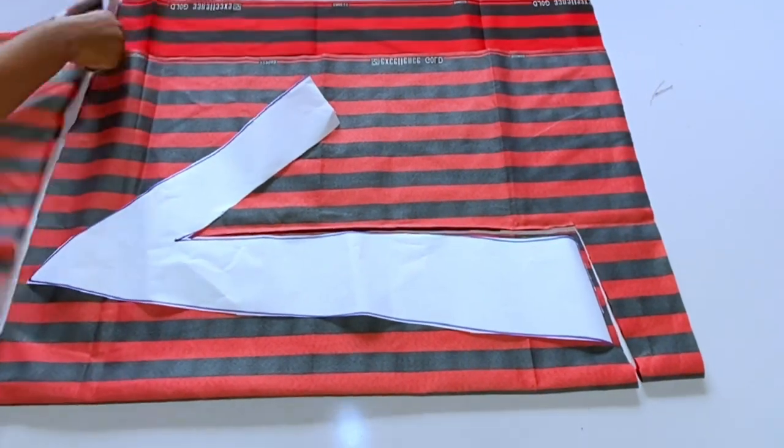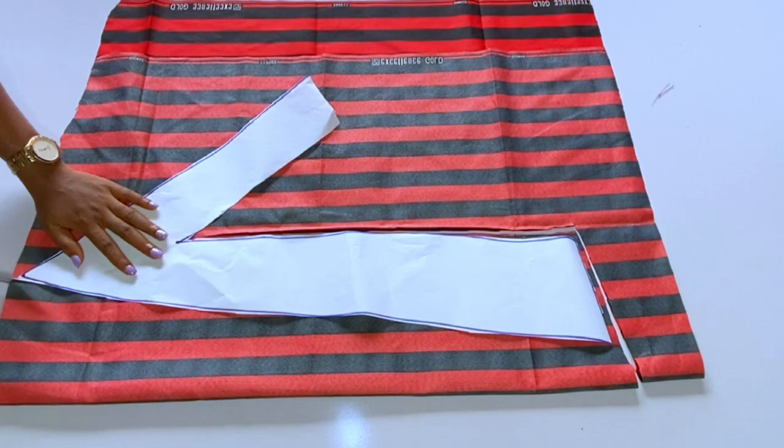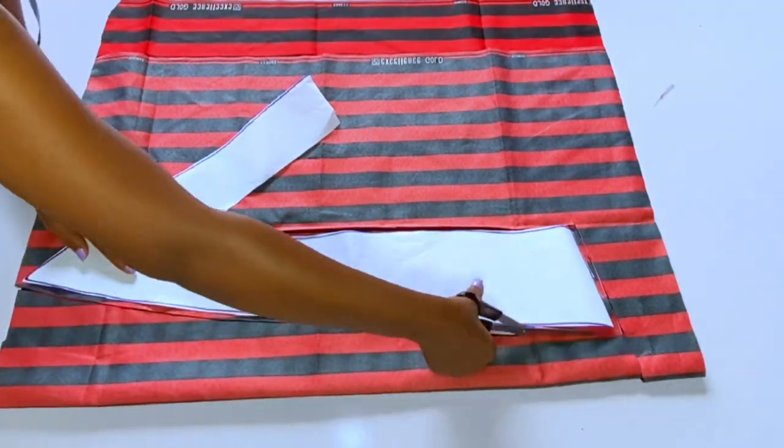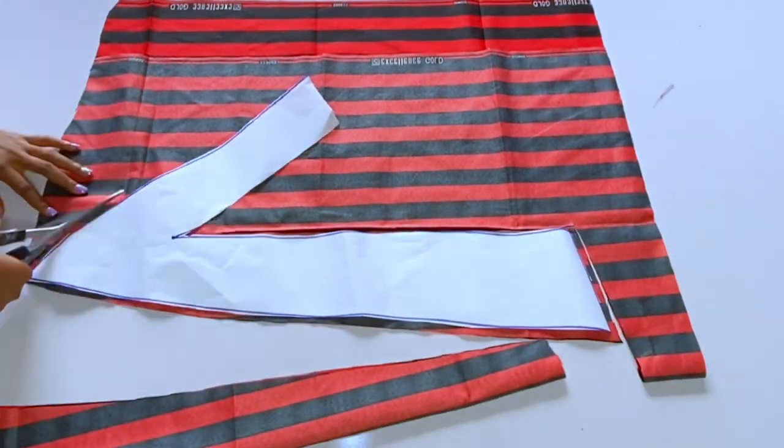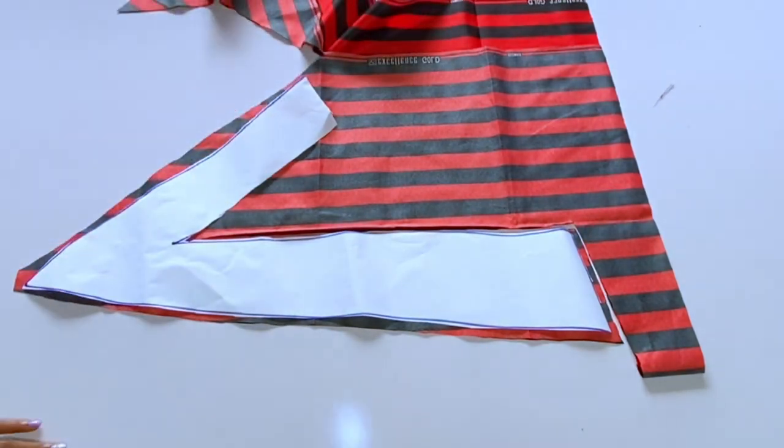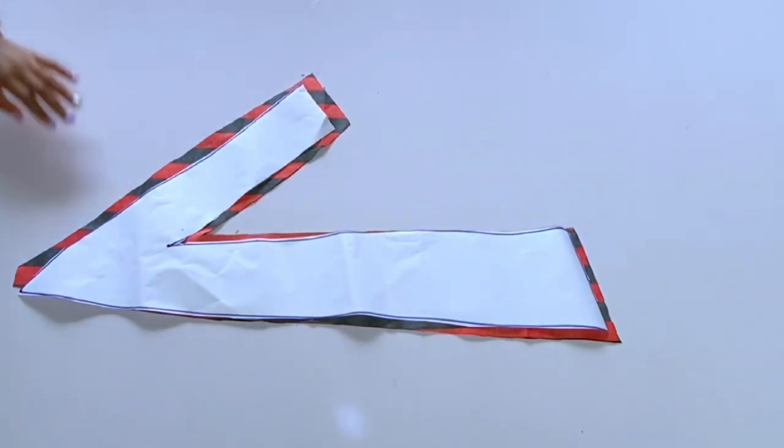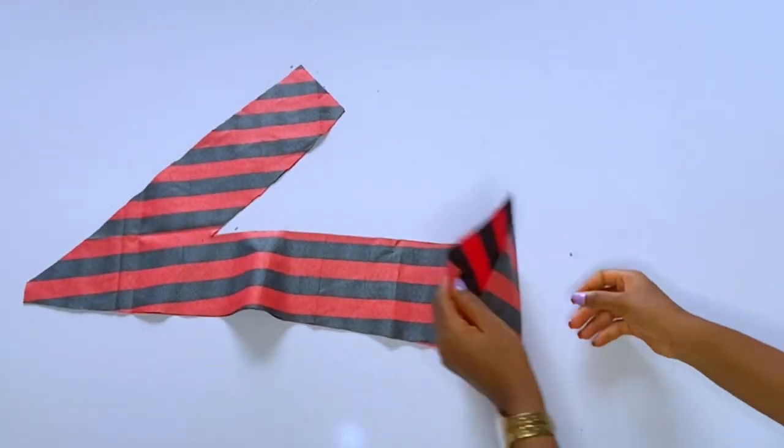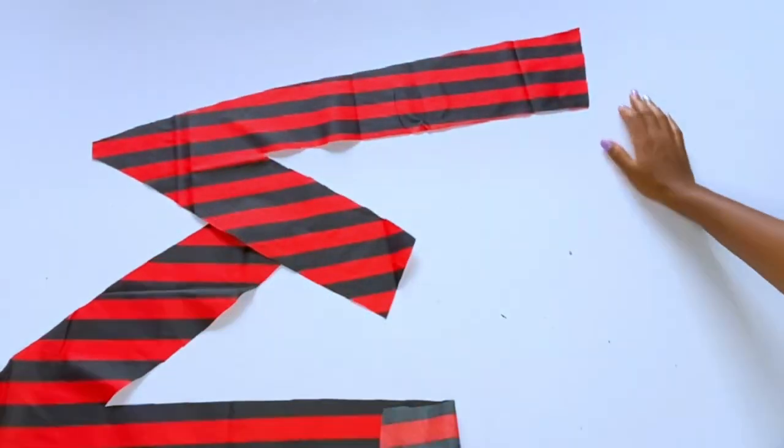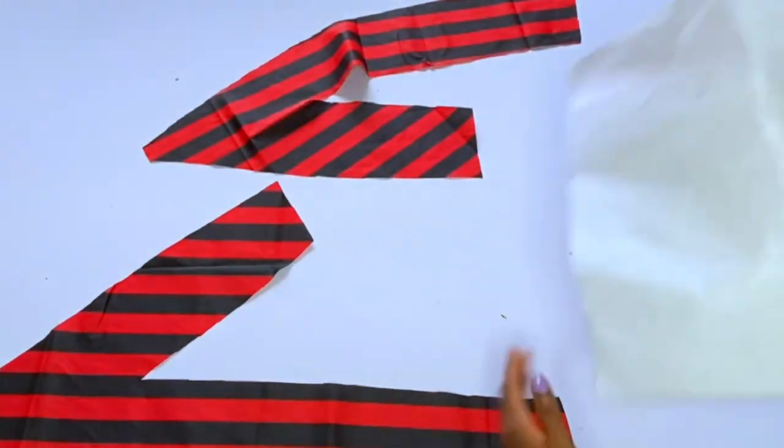So as you are cutting out, remember to add half an inch seam allowance around this A shape, add your half an inch seam allowance around it. If you feel like reducing the size you can reduce, if you feel like extending it you can extend. Now I have two pieces here and I'll go ahead and add collar gum to one of them.